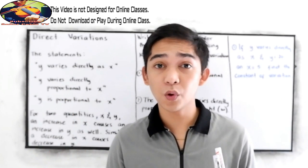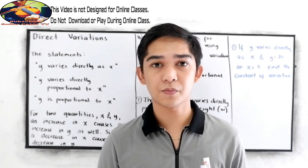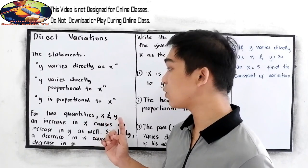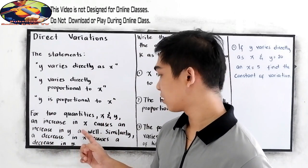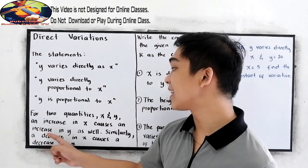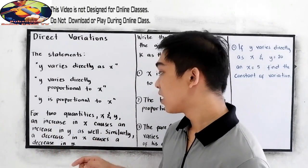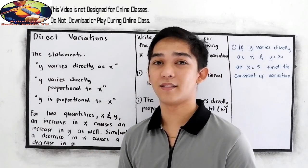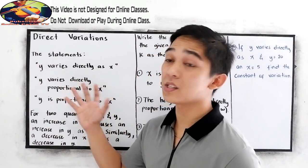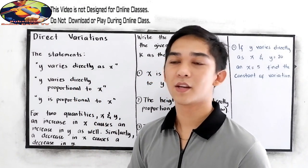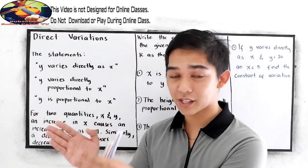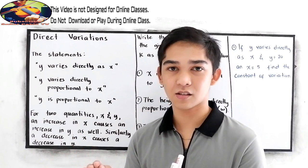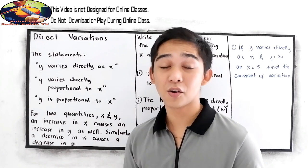But in this video, we will be focusing on direct variations. In direct variations, for two quantities x and y, an increase in x causes an increase in y as well. Similarly, a decrease in x causes a decrease in y. So if x increases, the value of y also increases, and if x decreases, the value of y also decreases.